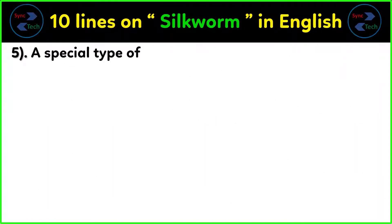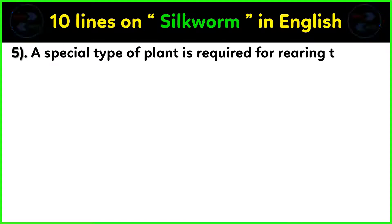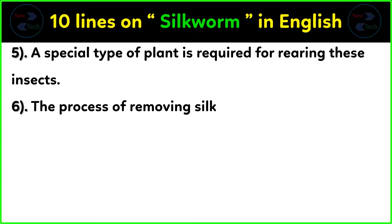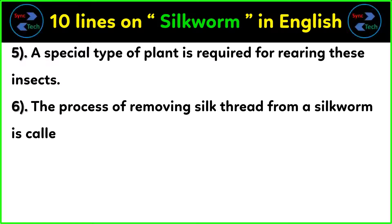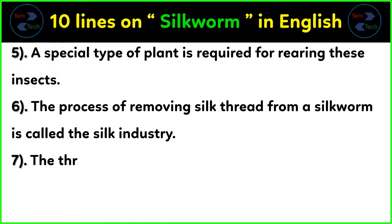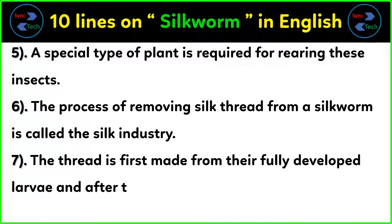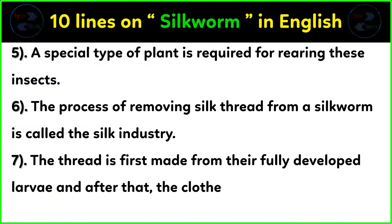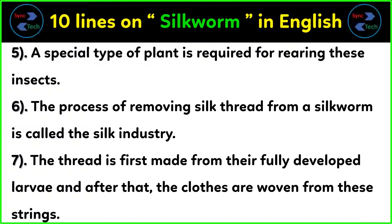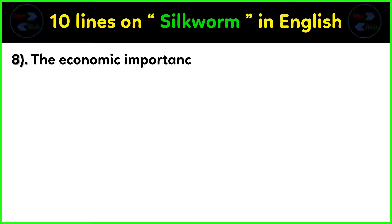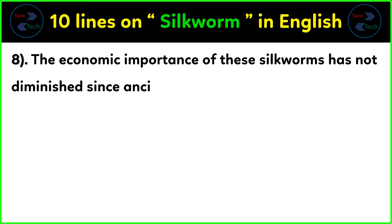A special type of plant is required for rearing these insects. The process of removing silk thread from a cocoon is called the silk industry. The thread is first made from fully developed larvae, and after that the clothes are woven from these threads.